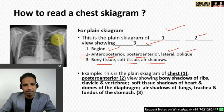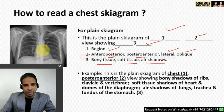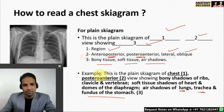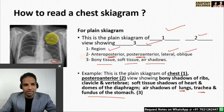This is a plain skygram example. There is a plain skygram of the chest, posterior-anterior view, showing bony shadows of ribs, clavicle, and vertebrae in the midline. Then soft tissue shadows of the heart, lungs, and domes of the diaphragm. Then air shadows of the lungs, trachea, and the fundus of the stomach, which may contain some air in this region.